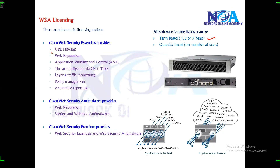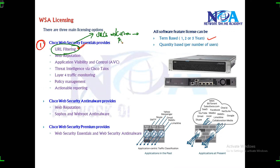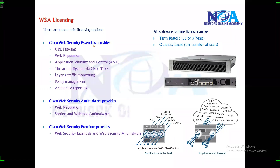The first is the Web Security Essential license, which provides URL filtering. You can filter specific URLs by defining your own custom URLs or using predefined categories — for example, blocking all social networking sites. The WSA has a built-in database used for this URL filtering.